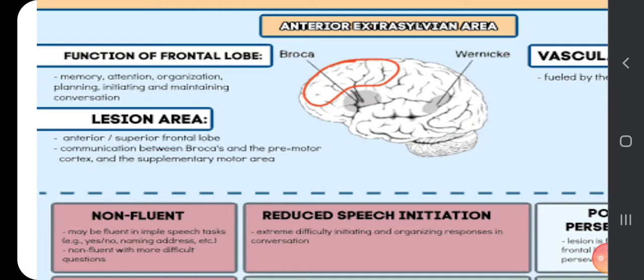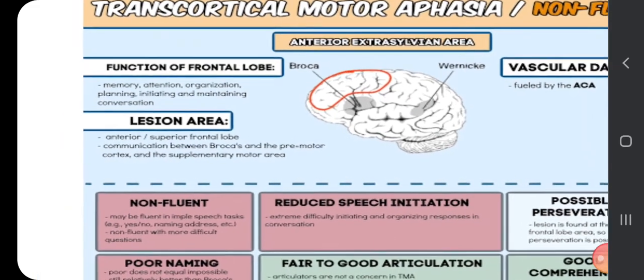The lesion area for this type of aphasia is an anterior and superior frontal lobe, communication between the Broca's and the premotor cortex, and the supplementary motor area.